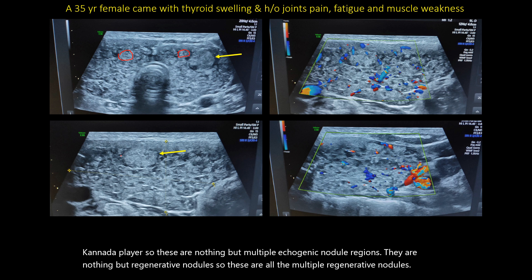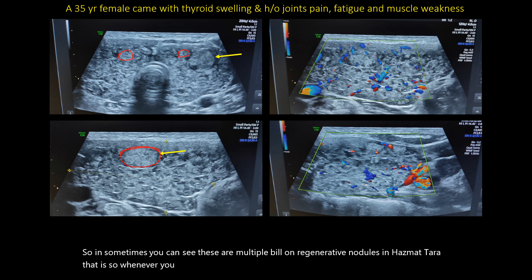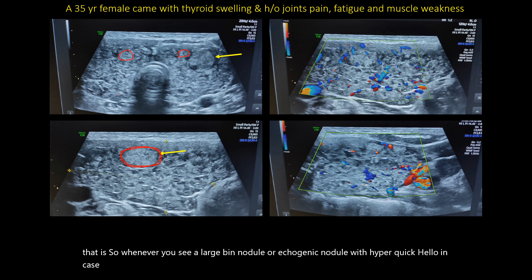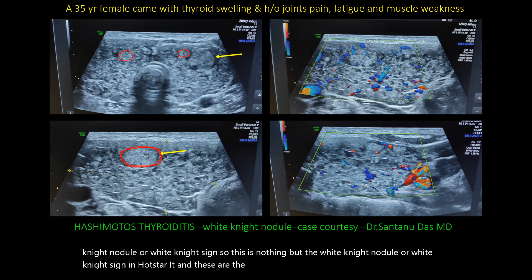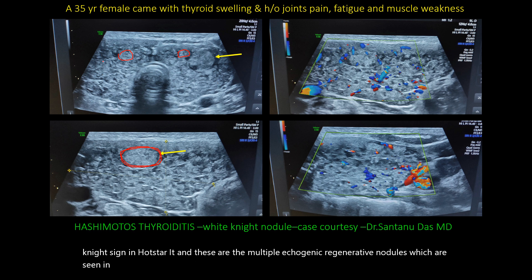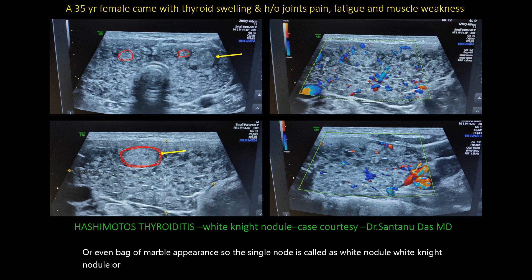These are multiple benign regenerative nodules seen in Hashimoto's thyroiditis. Whenever you see a large benign echogenic nodule with a hypoechoic halo in an enlarged gland with raised vascularity on color Doppler, definitely suspect a white knight nodule or white knight sign. This appearance with multiple echogenic regenerative nodules is also known as Swiss cheese pattern or bag of marbles appearance. A single such nodule is called the white knight nodule sign in Hashimoto's thyroiditis.